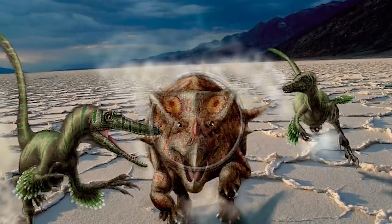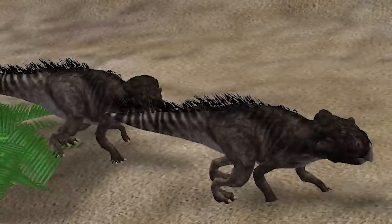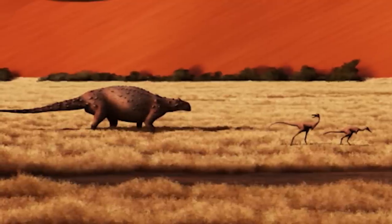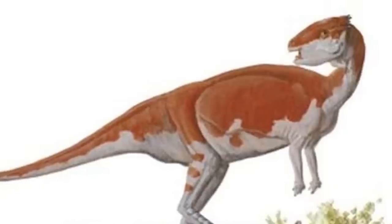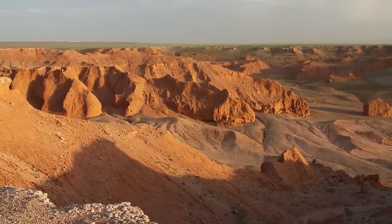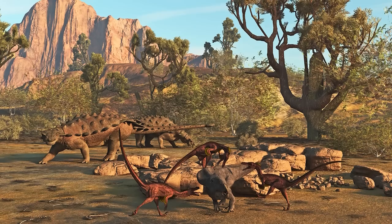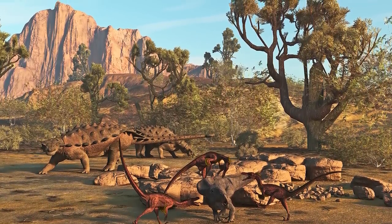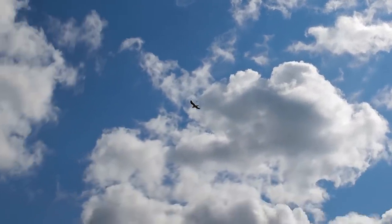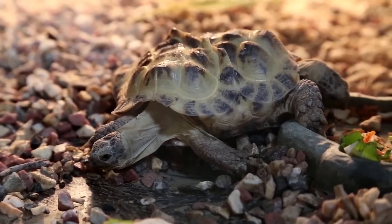Ceratopsians were among the most populous of the ornithischian dinosaurs known from this locality, with dinosaurs such as Bagaceratops, Bainoceratops, and the larger Udanoceratops. Ankylosaurs such as Pinacosaurus were also present, as was the pachycephalosaur Goyocephale. As for the sauropods, there is only one undetermined species known from Djadochta. The formation is also known for its array of small vertebrates — many genera of mammals are known from here, some of which may have fallen prey to Oviraptor — as well as early enantiornithine birds and turtles and lizards along the riverbanks.